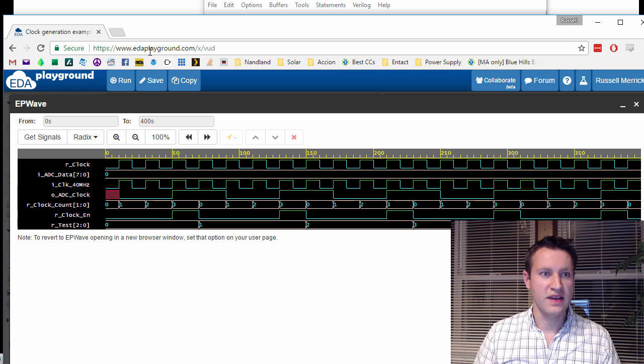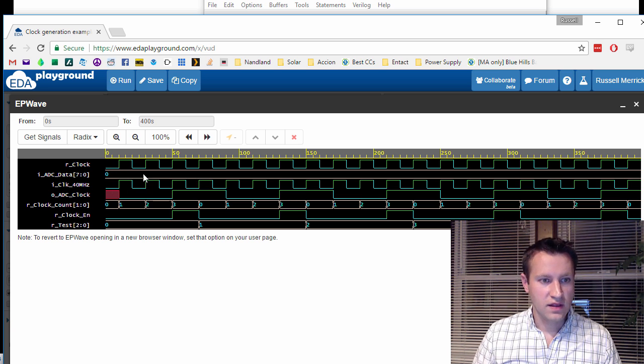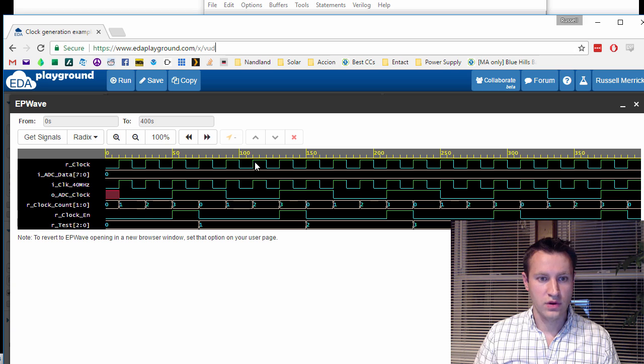I got some feedback in one of the other videos that people really like examples. So here's an example that shows you what I'm talking about here. This is a little test bench I threw together that just shows the code here. And you can see our clock running at some high frequency. And the ADC clock is running at four times slower. So one, two, three, four. This is the frequency. Let's see. Do I have cursors on this? Yeah.